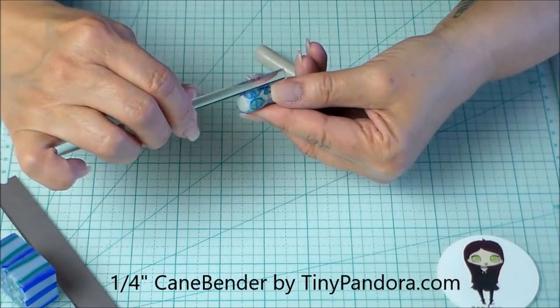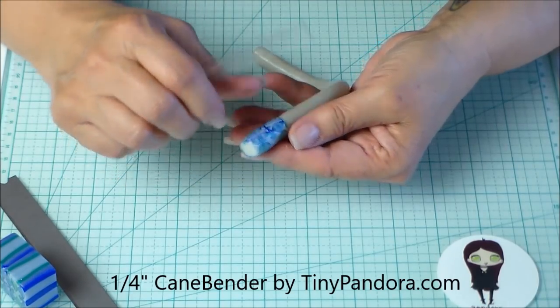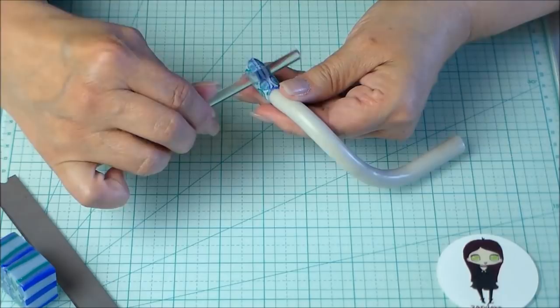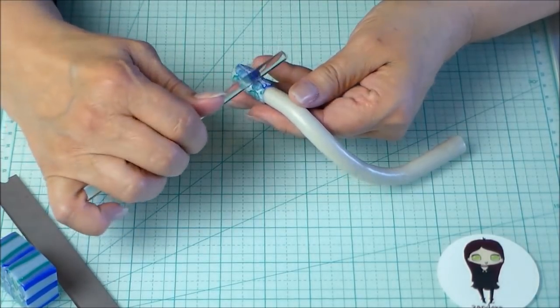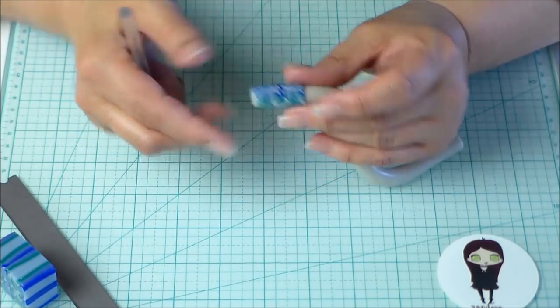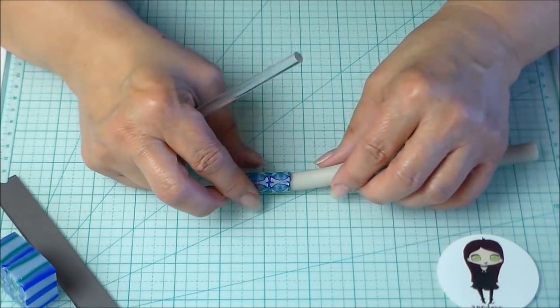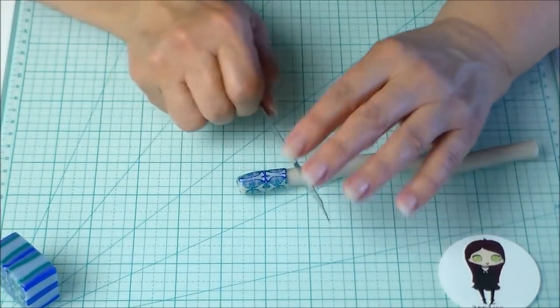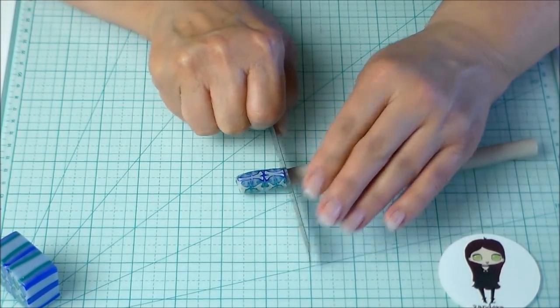I'm just smoothing this out with my cane bender and just making sure that I can't feel the seam anymore. As this video goes on you'll see how different this translucent cane looks on a white background, and that's key to your design. You're going to really want to see what kind of background you want under any kind of translucent cane.